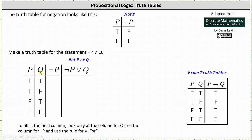Again, the first two columns list all the possible combinations of T's and F's for p and q. For the not-p column: not p is false when p is true, and not p is true when p is false. To fill in the final column we look at the columns for q and not p, using the rule for disjunction. The only way 'not p or q' can be false is if not p is false and q is false — which occurs in the second row. Everywhere else, 'not p or q' is true.